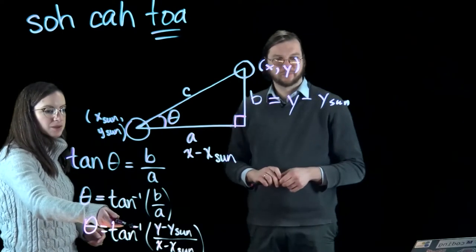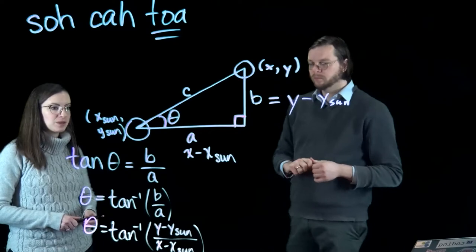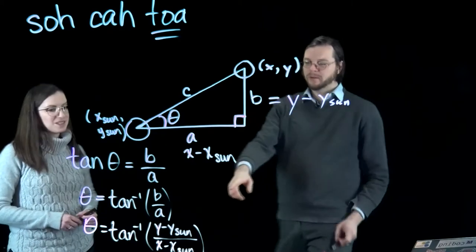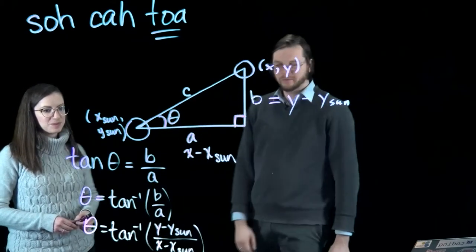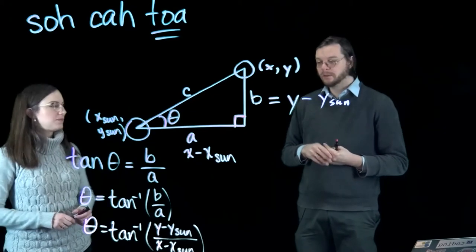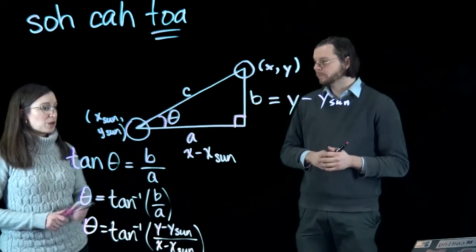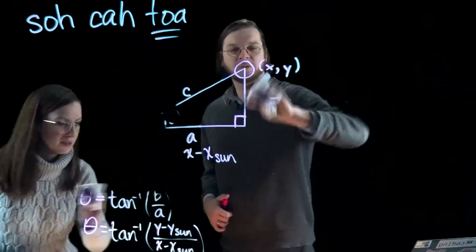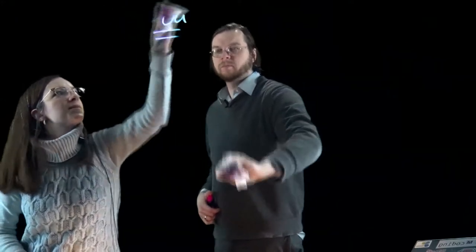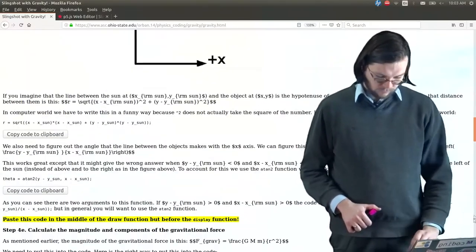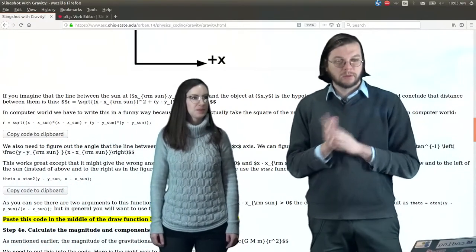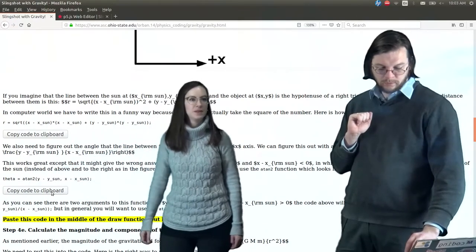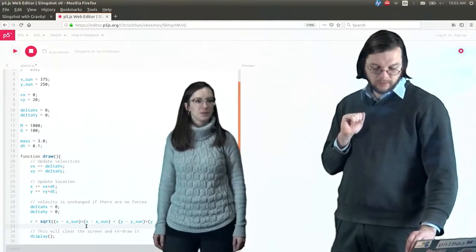Remember we don't use the minus-one superscript — we're not going to use 'to the power of' in computer language, and we're not going to just use 'tan'. We're going to use arc tangent. So the right way to put this into the code is the atan2 function right here. I'll click copy code to clipboard and paste it into the script.